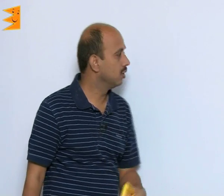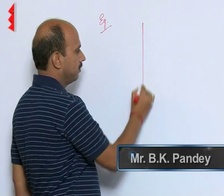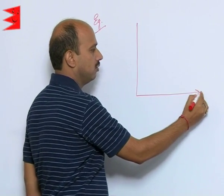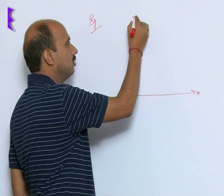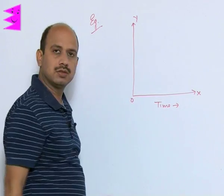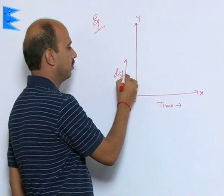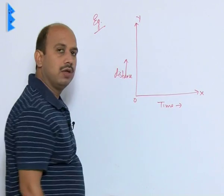Now, take another example. In this example I have taken distance time graph. See here, this is x axis, this is y axis. Here I am taking time t, and here this is origin, and here we have taken distance.